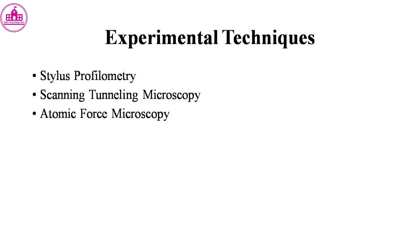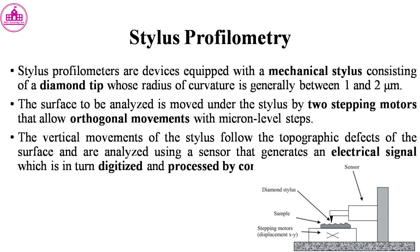Stylus profilometers are devices equipped with a mechanical stylus consisting of a diamond tip whose radius of curvature is generally between 1 and 2 micrometers. The surface to be analyzed is moved under the stylus by two stepping motors that allow orthogonal movements with micron-level steps. The vertical movements of the stylus follow the topographic defects of the surface and are analyzed using a sensor that generates an electrical signal, which is in turn digitized and processed by computer.